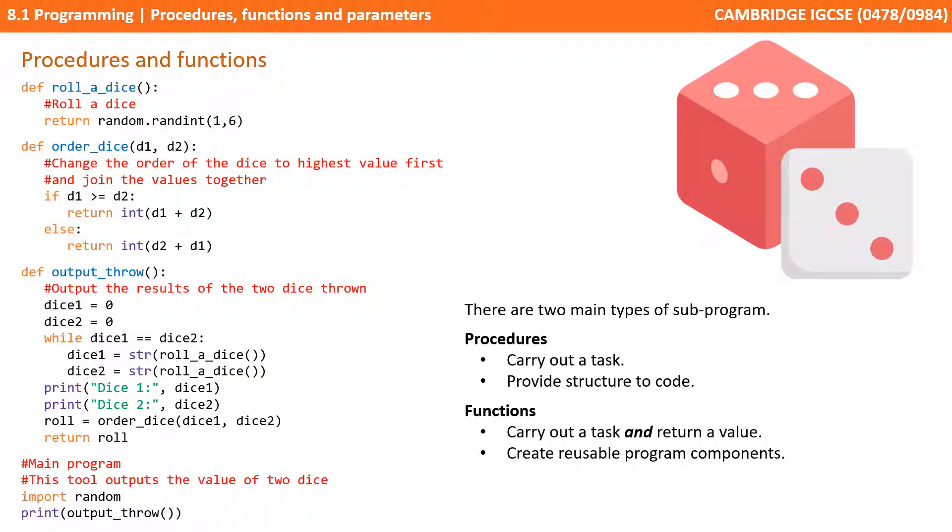In order to fully understand procedures and functions we're going to use the example of this simple roller dice game written in Python which we've been using in a number of these videos. We'll look at the actual IGCSE Cambridge pseudocode at the end of this video.